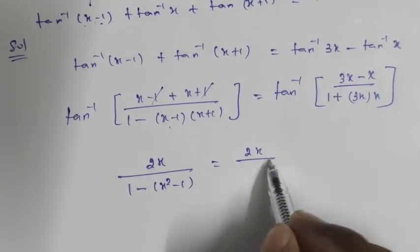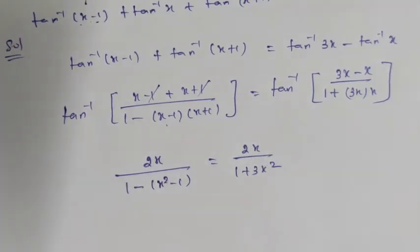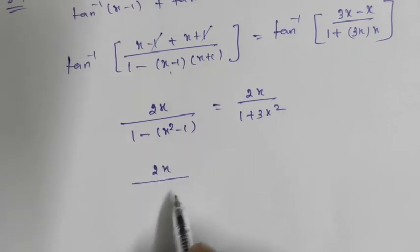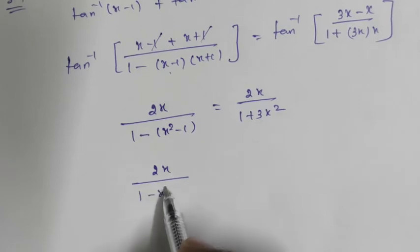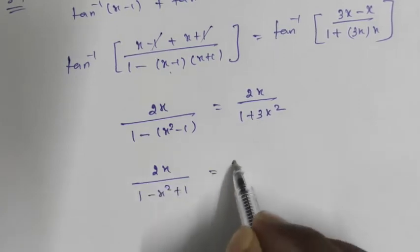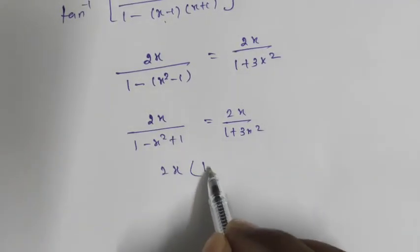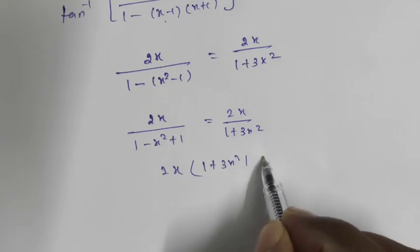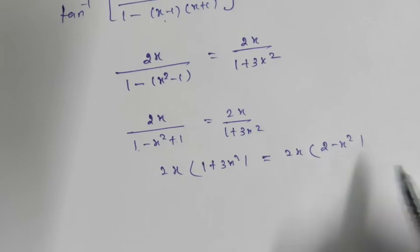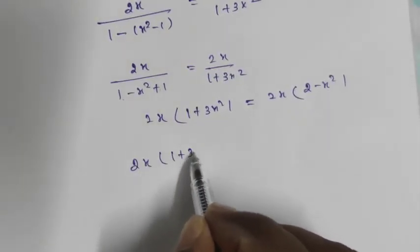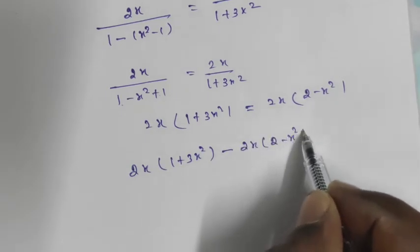You can see 2x divided by (1 plus 3x squared) on the right side. Cancelling the common structure, cross multiplying gives: 2x times (1 plus 3x squared) equals 2x times (2 minus x squared), which simplifies to: 2x(1 plus 3x squared) minus 2x(2 minus x squared) equals 0.